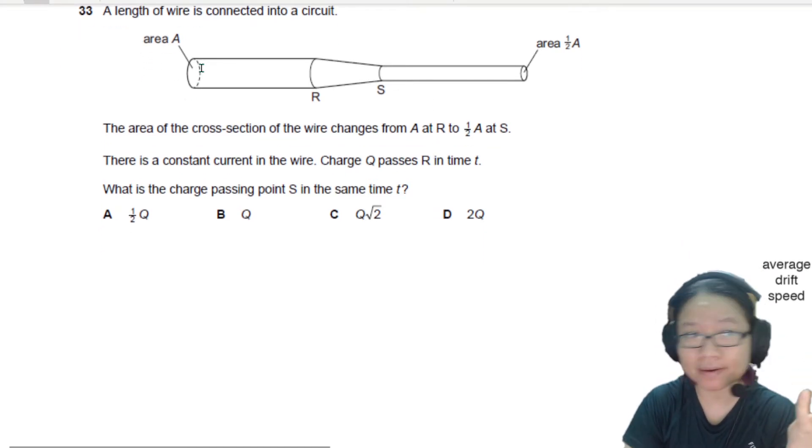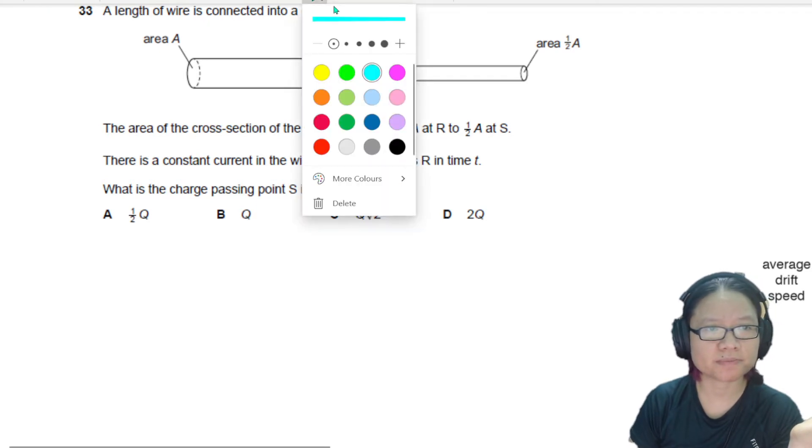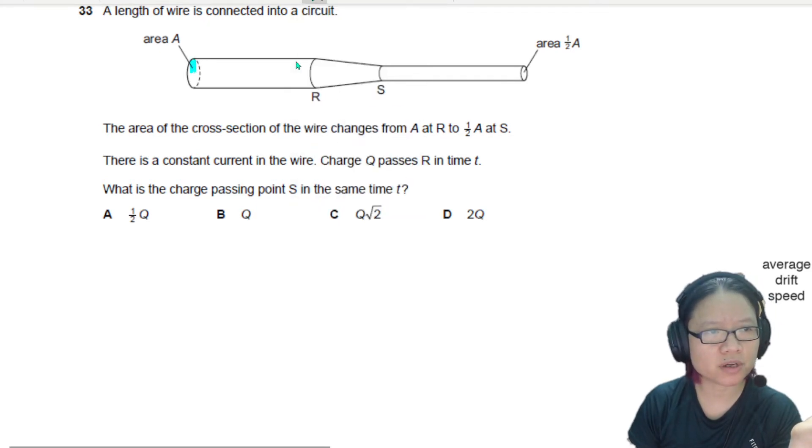things are thicker, or rather the area here is A. I'm gonna highlight that area for you. And then eventually the area will decrease to half A, so the area is halved.